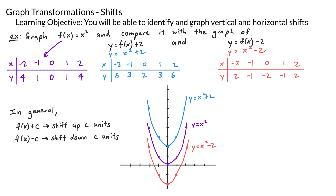From our examples, we observe the following: if you take your function and add a number c to it, the effect is that you shift the graph up c units. On the other hand, if you subtract c from your function, it shifts the graph down c units. These are what we call vertical shifts.